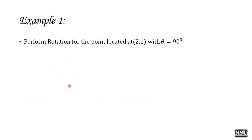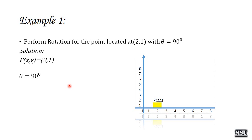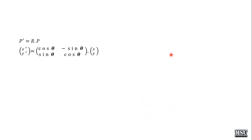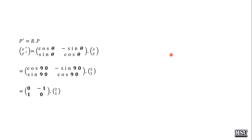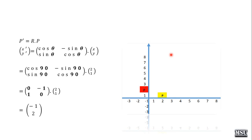Example: Perform rotation for the point located at (2, 1) with theta = 90 degrees. We know p(x, y) = (2, 1) and theta = 90°. There is no pivot point given, so we perform rotation with respect to the origin. Applying p dash = R × p: [cos 90°, −sin 90°; sin 90°, cos 90°] × [2, 1]. Since cos 90° = 0 and sin 90° = 1, the result is (−1, 2).